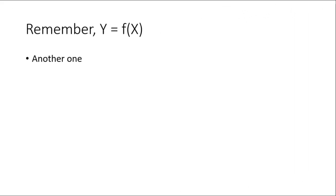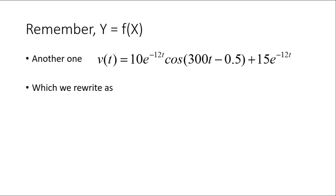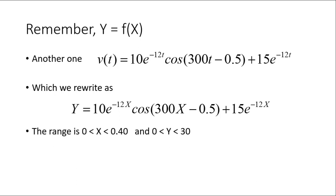Let's have another example. In this case, a voltage that is changing with time, V(t) = 10*e^(-12t)*cos(300t-0.5). The first thing, as usual, we write that as Y as a function of X. We will do that directly in the app. And then we choose the range. I'm going to choose between 0 and 0.4 seconds for X, and the voltage between 0 and 30 volts. I know that curve, I know what to expect.